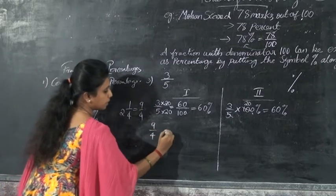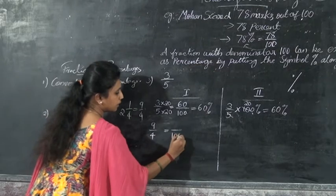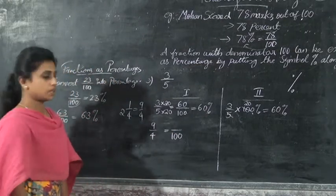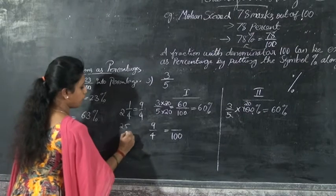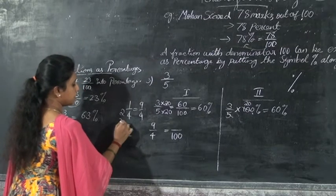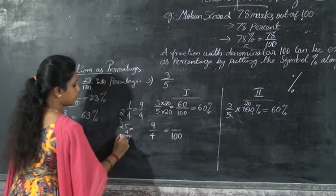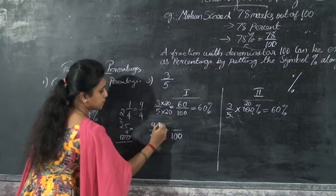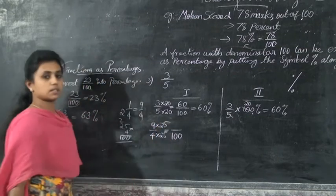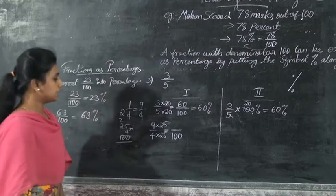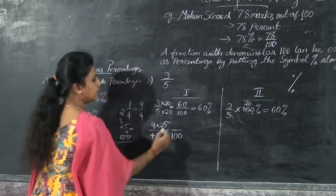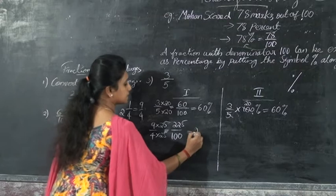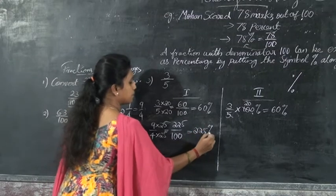For 9 by 4, you want to make the denominator 100. What do you multiply 4 by to get 100? 25 times 4 gives 100. So multiply both numerator and denominator by 25. That gives 225 by 100, so the answer is 225 percent.